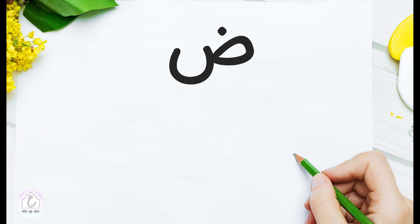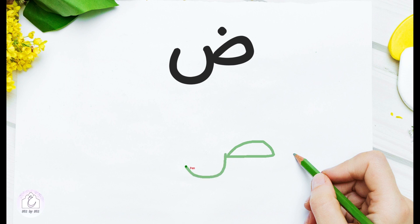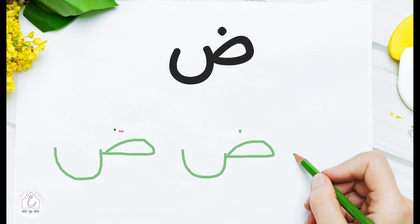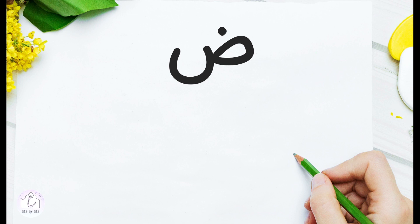To draw Ḍād in the isolated form, draw a curved line in a clockwise direction, then turn left for a straight line and close it with a semicircle, then add the dot. A curved line, a straight one, then a semicircle, and a dot. Come on, give it a try — grab a pen and paper and try to draw it, and please pronounce the sound as you draw it.